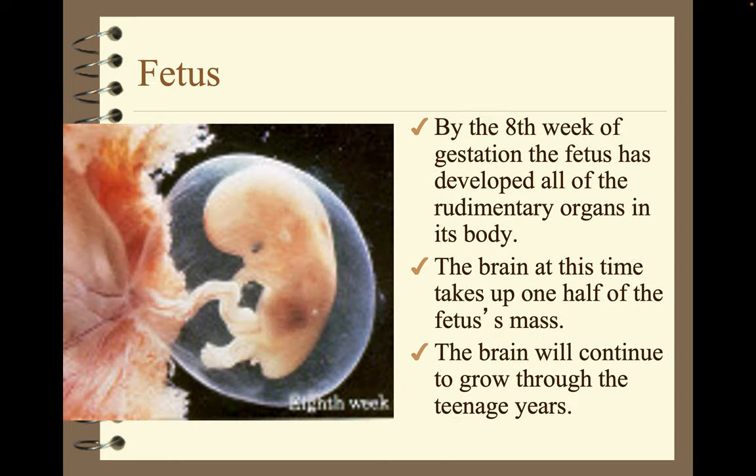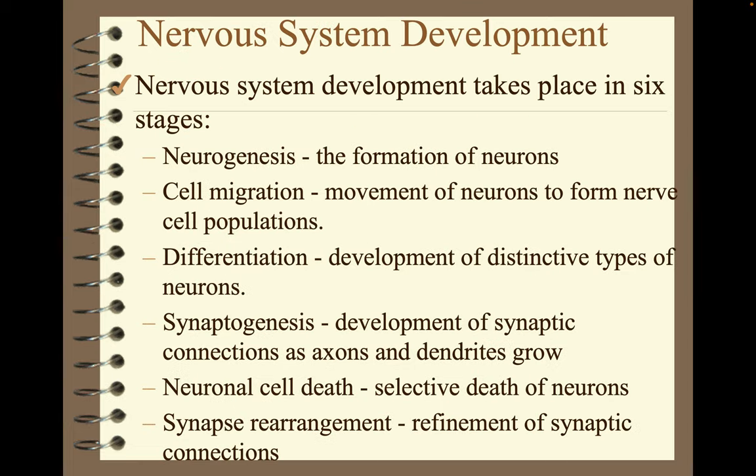By the eighth week of gestation, the fetus has developed all the rudimentary organs in its body. The brain at this time takes up one half of the fetus's mass. The brain will continue to grow through the teenage years — it actually grows into your mid-twenties, so your brain is continually changing.